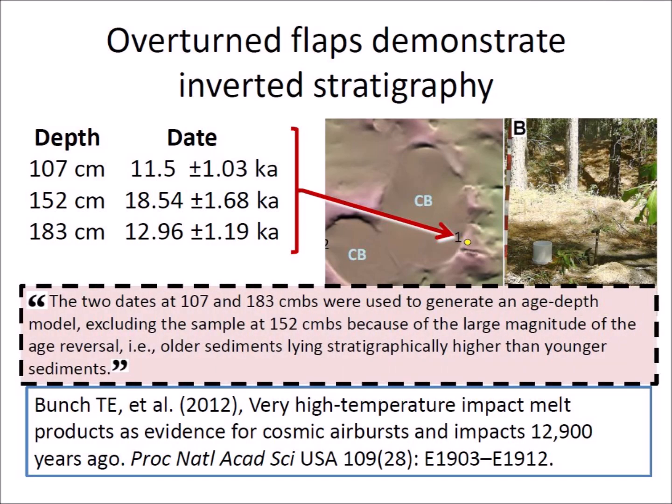In 2012, the rims of the Carolina Bays were thought to be aeolian in origin — that is, created by wind-blown sand — so the layer showing the inversion was excluded. As explained in the paper: "The two dates at 107 and 183 centimeters below the surface were used to generate an age-depth model, excluding the sample at 152 centimeters because of the large magnitude of the age reversal" — that is, older sediments lying stratigraphically higher than younger sediments.